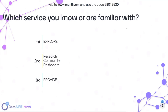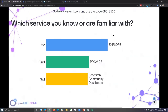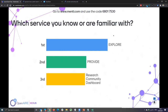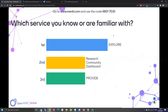You can respond whether you have used this service in the past or plan to use it in the future. The three options are Explore, Research Community Dashboard or Connect, and Provide. Almost 20 people are responding. Results show Explore is number one, then Provide, then the Research Community Dashboard.